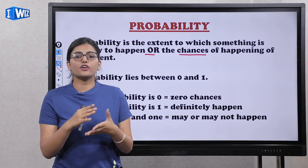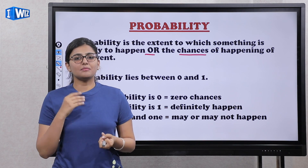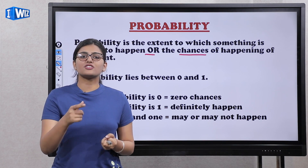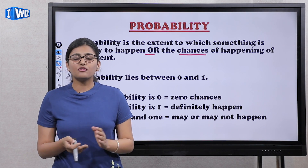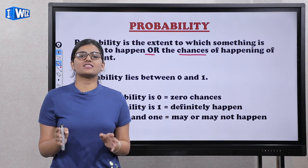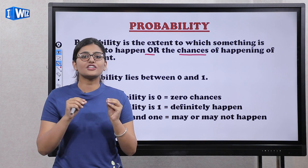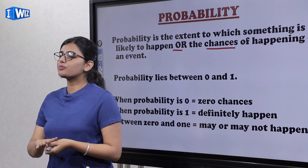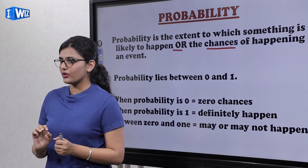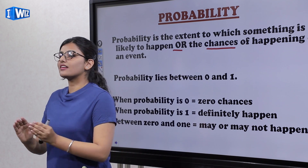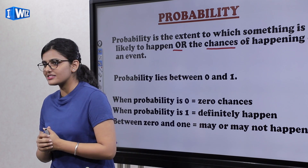For example, if you had a test and you asked your friend, 'Will you pass?' He says there is no chance. He is definitely sure that he will not pass. So the probability of his passing is zero. Whatever thing is impossible, its probability is zero.